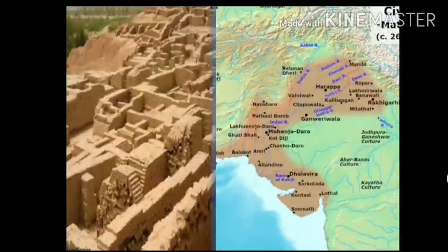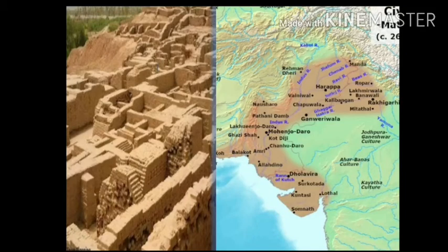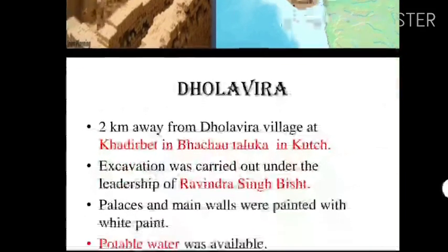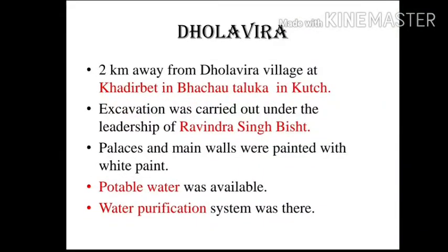You can see in the map the places where civilizations contemporary to the Indus Valley Civilization existed. Dholavira, a town contemporary to the Harappan Civilization, is located at Khadir Bet of Bachau Taluka in Kach district.